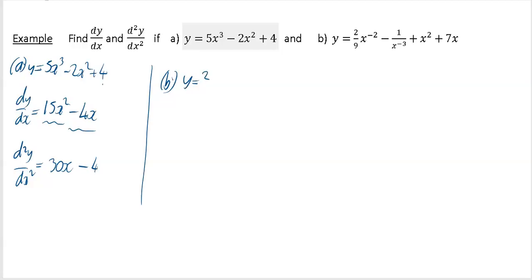You've got 2/9 times x^(-2). Nothing strange about that. The second last term is an x² term, and you have a 7x term.